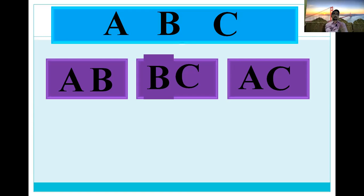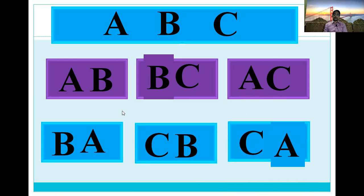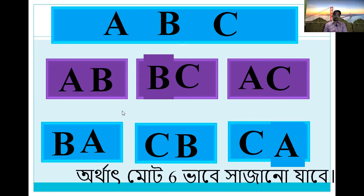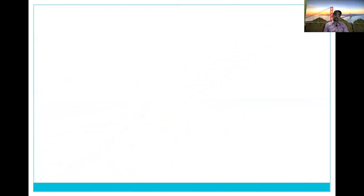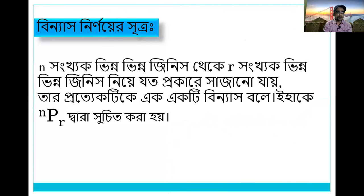Look at the picture carefully — you will see something different. There is a difference here. If the writing was changed — b-c to c-b — dekko, change hojhe. Then a-c to c-a. How many types are there? There are 6 types — sajanojaj. That is the arrangement.